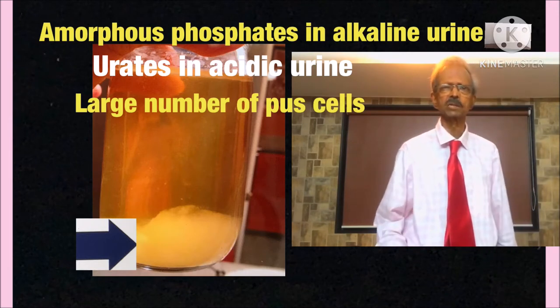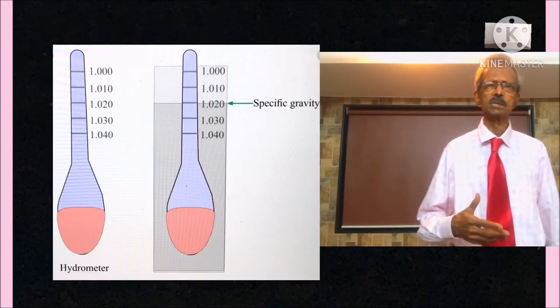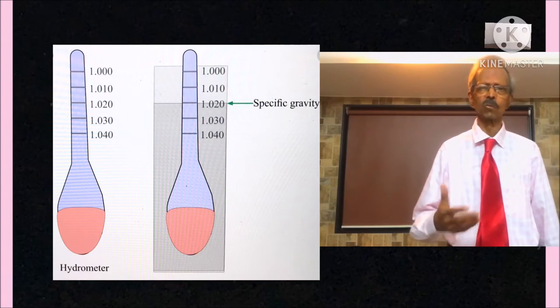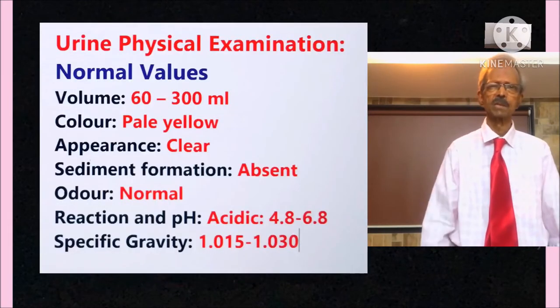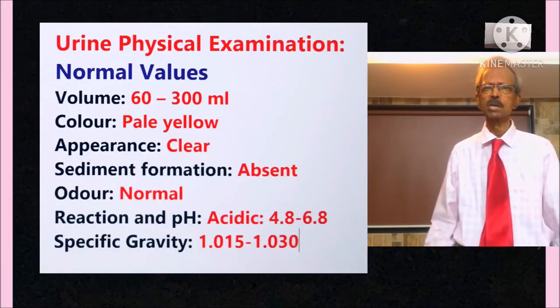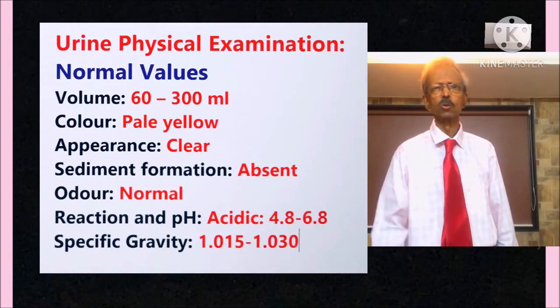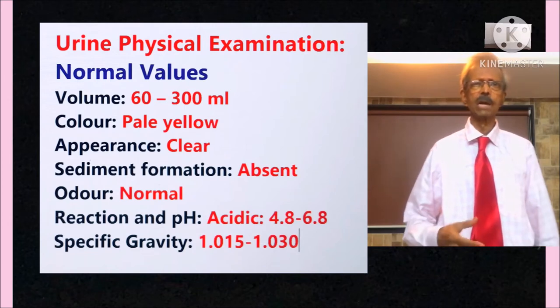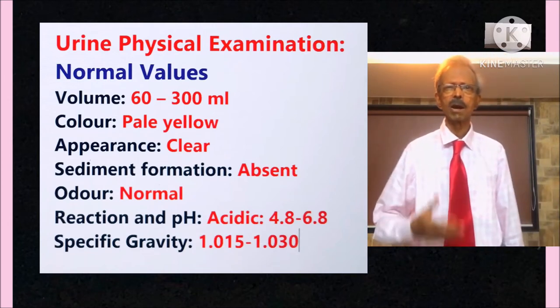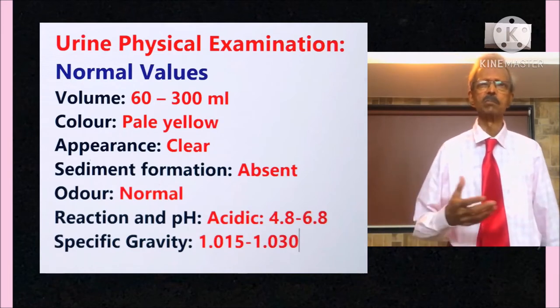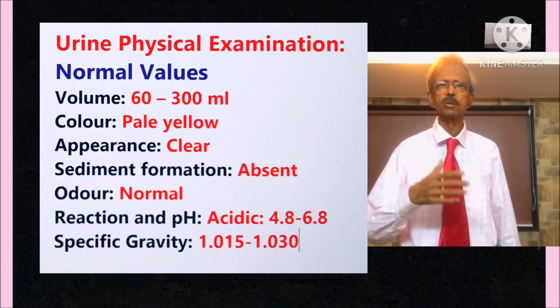Regarding specific gravity. Normal specific gravity is 1.015 to 1.030. Decrease in specific gravity indicates chronic renal disease or diabetes insipidus. And increase in specific gravity indicates presence of large amount of solutes like glucose as it is seen in diabetes mellitus.